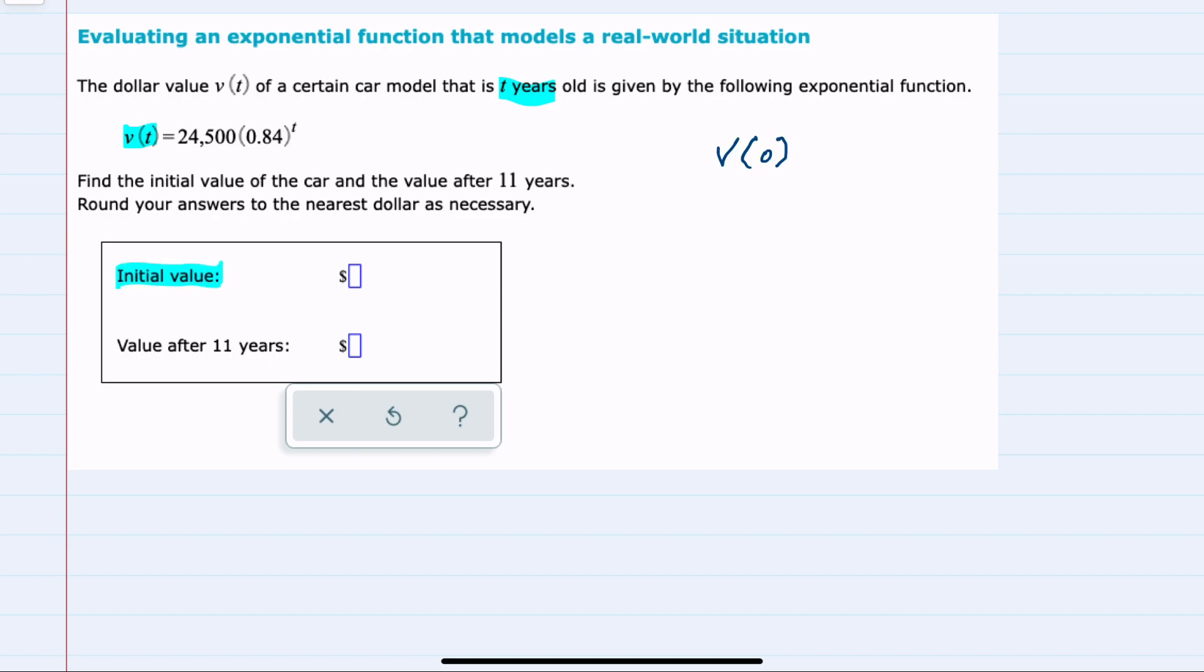and the initial value would be v of 0, where time is 0, where we would replace t with 0 and then evaluate. And using the order of operations, we would start with our exponents. So we would evaluate that 0.84 to the 0 power.